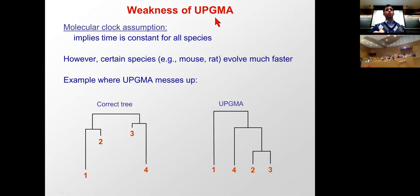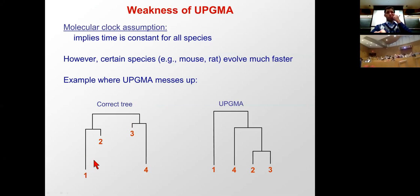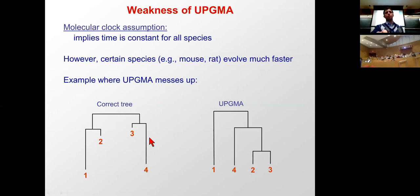UPGMA's weakness: it assumes a molecular clock — equal evolutionary rates across all species. If some species like mouse and rat evolve faster, UPGMA can produce incorrect trees via long-branch attraction (or equivalently short-branch attraction), where longer branches are incorrectly grouped together and shorter branches are pulled together.